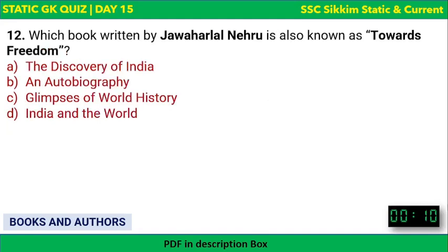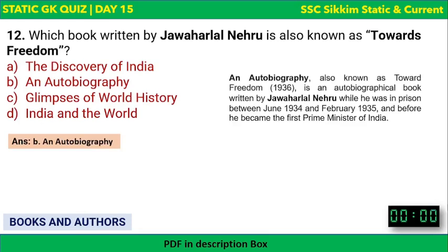Which book written by Jawaharlal Nehru is also known as 'Towards Freedom'? All four options — Discovery of India, An Autobiography, Glimpses of World History, and India and the World — are books written by Nehru, but the one known as 'Towards Freedom' is his autobiography. It was written during his imprisonment between 1934 and 1935 and published in 1936.